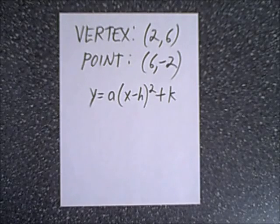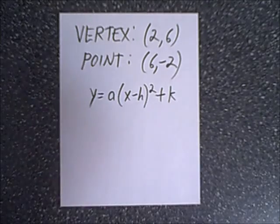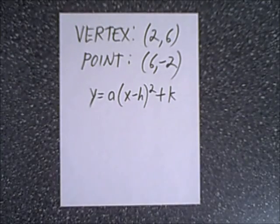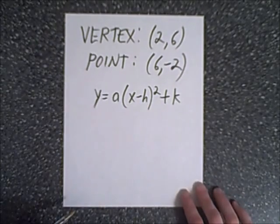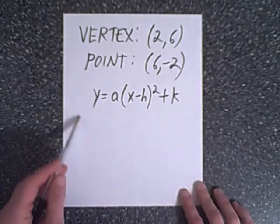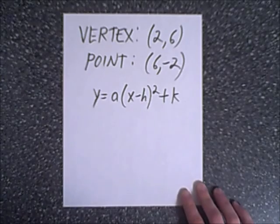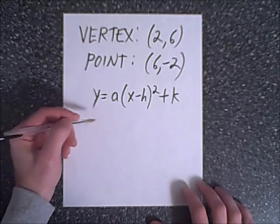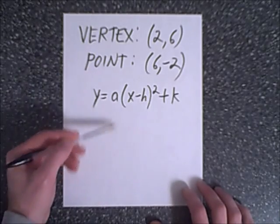In this example, we are given a vertex and a point. As mentioned, you need three points, but with the vertex you can intuitively figure out the axis of symmetry and a third point. The standard strategy is to write the general equation — in vertex form — and then substitute the given point in to find the a value.